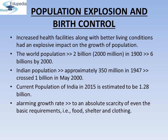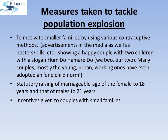Therefore, the government was forced to take up serious measures to check this population growth rate. The most important step to overcome this problem is to motivate smaller families by using various contraceptive methods. You might have seen advertisements in media as well as posters, bills, etc., showing a happy couple with two children with the slogan 'Hum do, hamare do' — 'we two, our two.' Many couples, mostly the young, have even adopted a one-child norm.